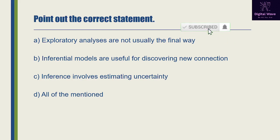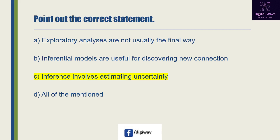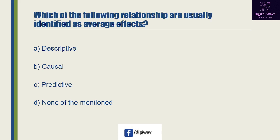Next question: point out the correct statement. Option A is 'exploratory analysis are not usually the final way', option B is 'inferential models are useful for discovering new connections', option C is 'inference involves estimating uncertainty', and the last option is all of the mentioned. The right answer will be C, because statistical inference is the process of deducing properties of an underlying distribution by analysis of data.